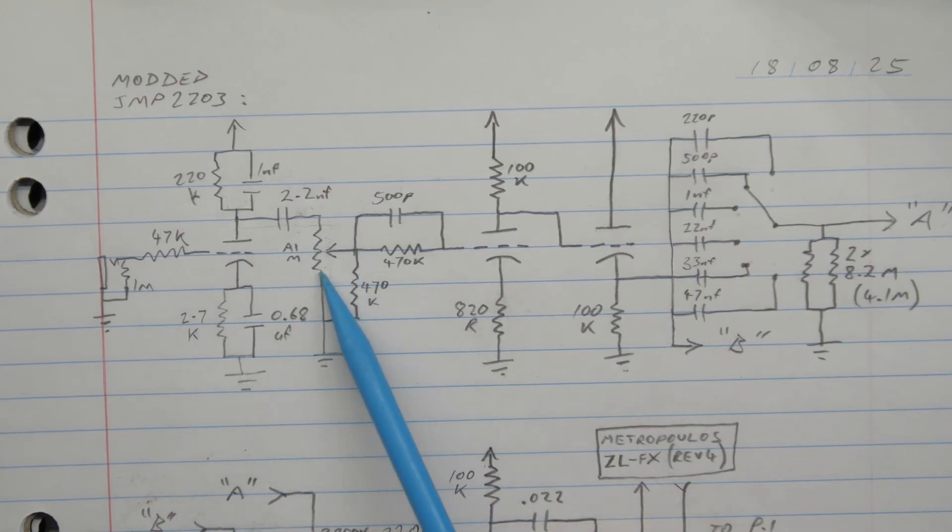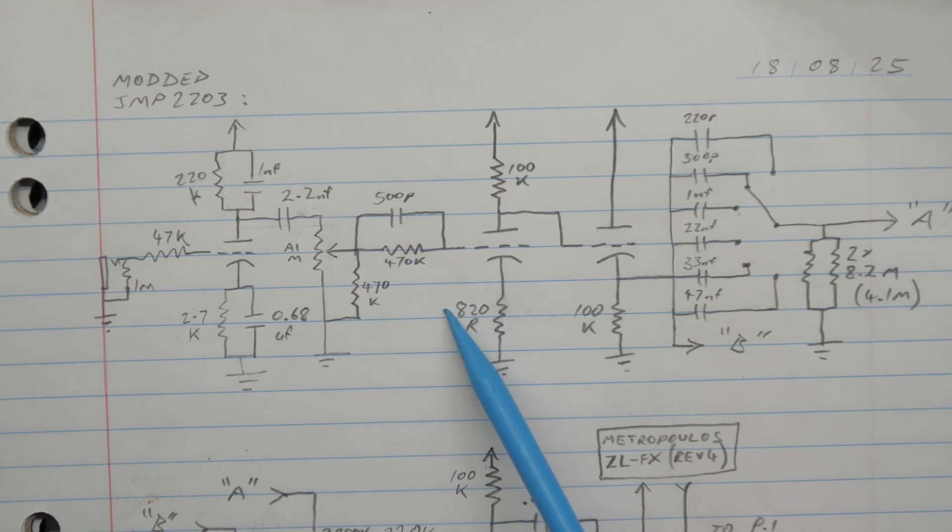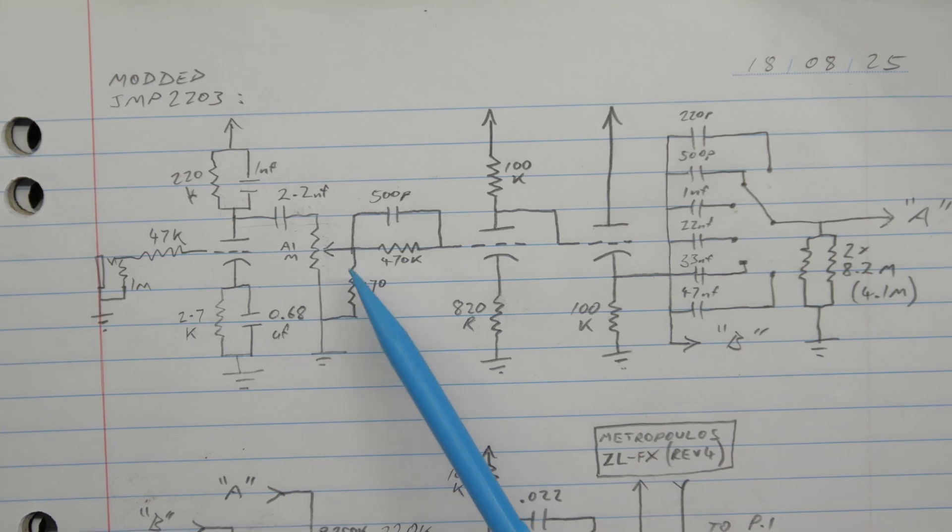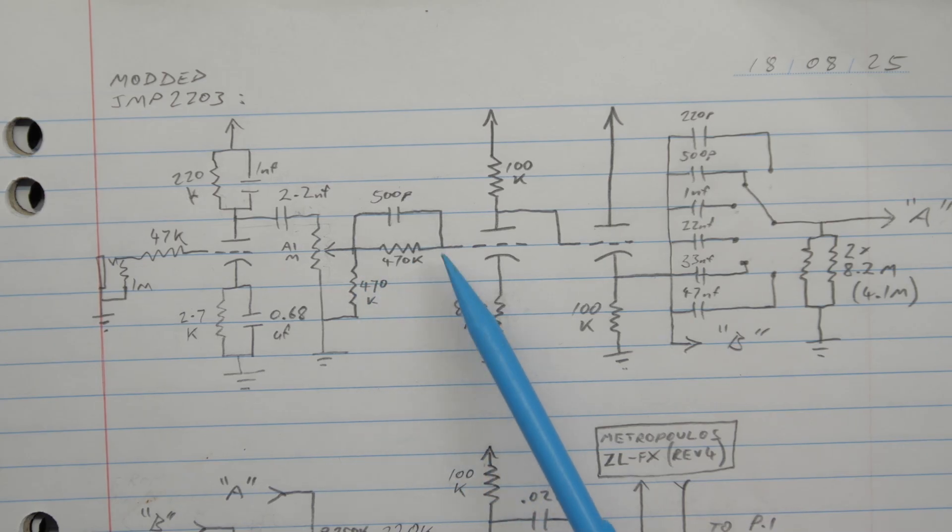Next, we move on to the gain pot, and it's got some possible taper tweaking here, changing the taper of that pot slightly. Maybe that was just a mistake, and it was supposed to be over here as an attenuator, because this here isn't typically an attenuator. It does change the taper of the pot, and it does change the overall level, but it's not a voltage divider. You've got a 500 pico bright cap there. You see this in Marshalls all the time, but usually it's the other way around.